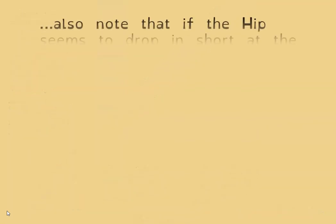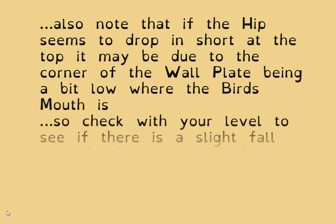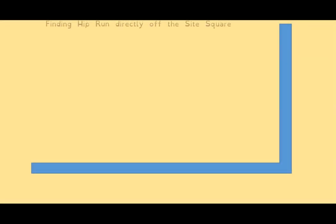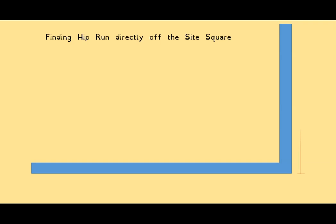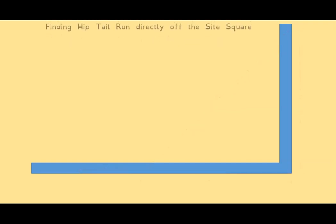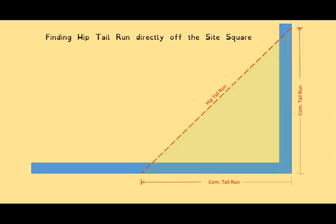If the hip drops in a bit low, it could be that the wall plate at the corner is slightly low — check with a level and wedge it up a touch and the hip will rise at the top to suit. Another way to find the hip run: measure the half span on one leg of the square and the same half span on the other leg — the diagonal between those two points is the hip run. The same procedure works for the hip tail run using the common tail run measured on both legs of the square, and that can even be done on a corner of a sheet of plywood.